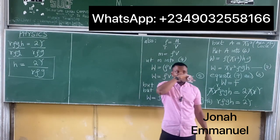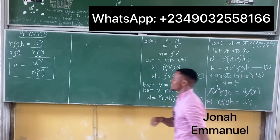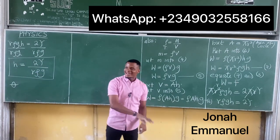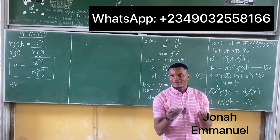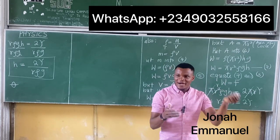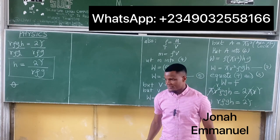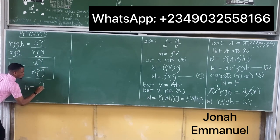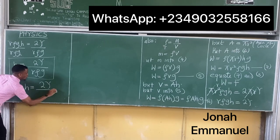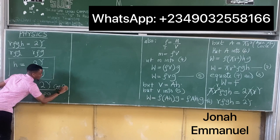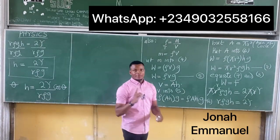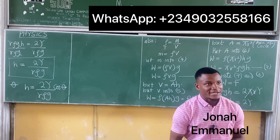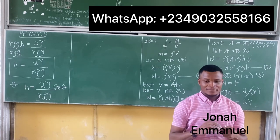Note: given the angle of contact theta, the formula becomes h = 2γcosθ / (rρg). The cosθ term is optional — use it only when the angle of contact theta is specified in the question. If it's not given, there's no need for cosθ.